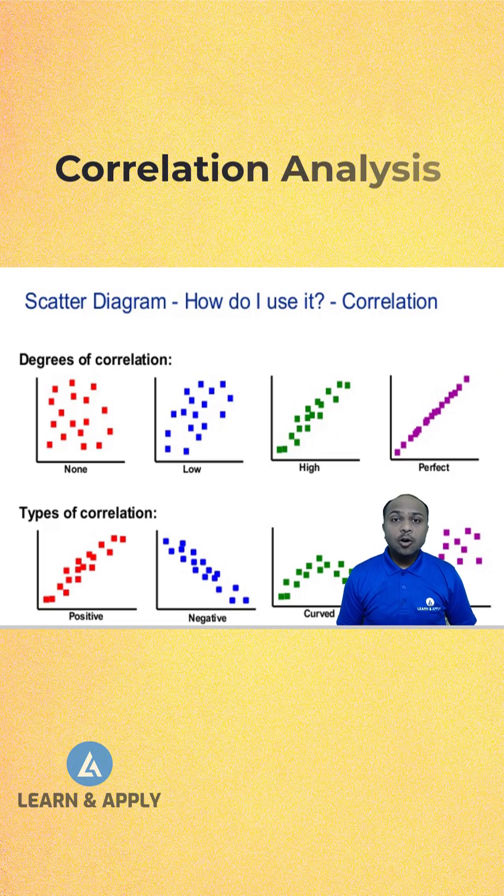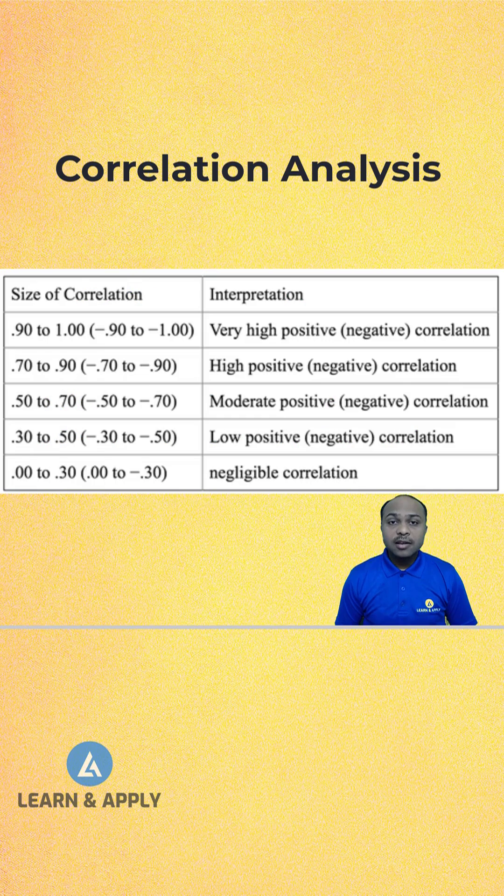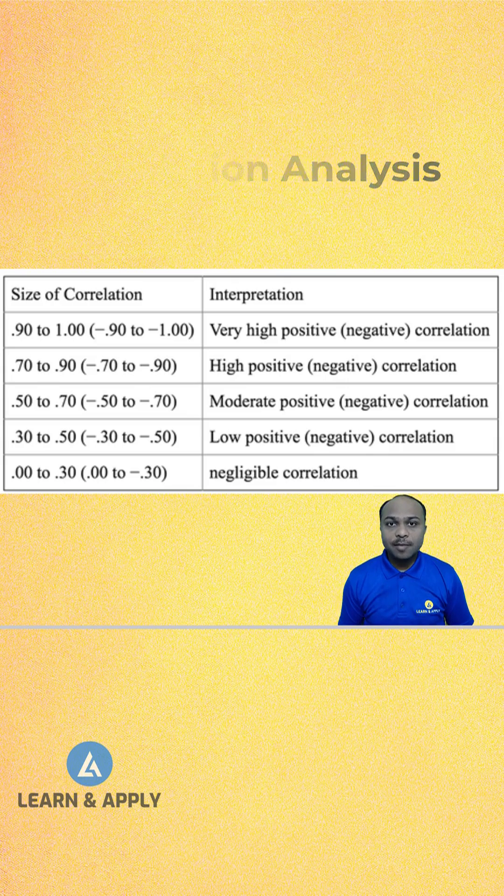We are using the correlation analysis to understand the strength of relationship between two or more variables. This is indicated by R, also called as Pearson's coefficient. Depending on the value of Pearson's coefficient, we can see what is the strength of relationship between two or more variables.